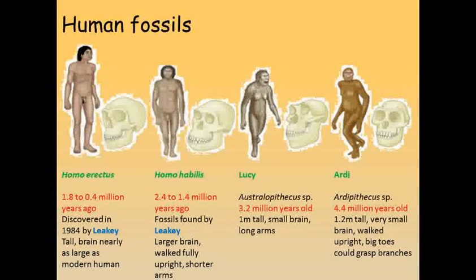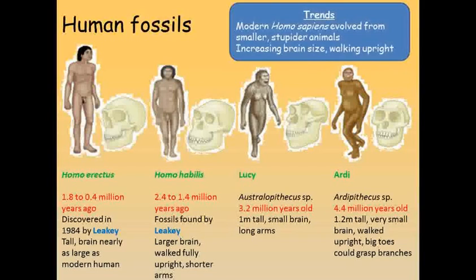Lucy is an example of an Australopithecus fossil that has been dated at around 3.2 million years old. Even further into the past, we find another genus, Ardipithecus, which is also extinct. Ardi is a fossil belonging to this genus that has been dated at 4.4 million years old. When we compare these fossils, we can see a few important trends over this time period: the size of the skull cavity and therefore brain increasing, the loss of big toes which used to enable us to grasp branches, arms becoming relatively shorter, and an overall increase in size.